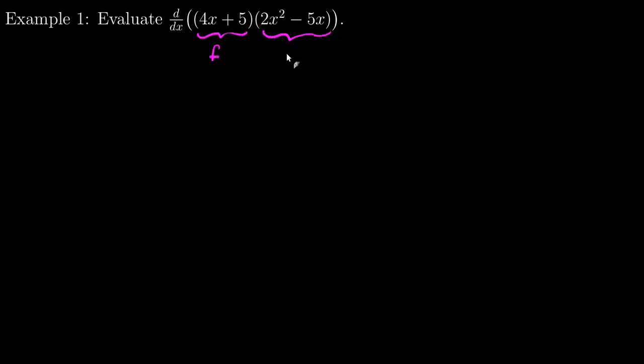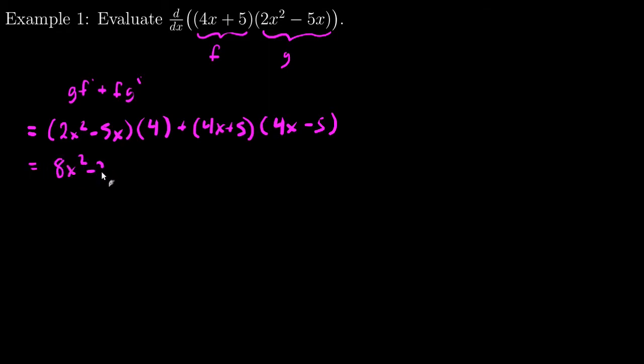I'll make this f, make this g. And, I know that this derivative will be gf' plus fg'. And, so I just follow through with that. g is 2x^2 - 5x. f' is 4 plus f is 4x + 5. g' is 4x - 5. And, I distribute through the 4. And, I'll get 8x^2 - 20x.